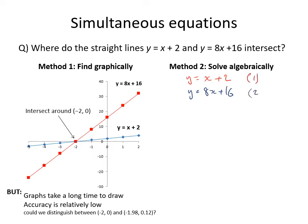There are two different ways to solve these. One thing we can do is take equation 2 and subtract equation 1 from it. This is valid because in both equations y is equal to their respective right-hand sides, so subtracting x + 2 from 8x + 16 is the same as subtracting y from y.